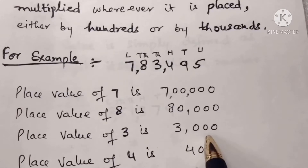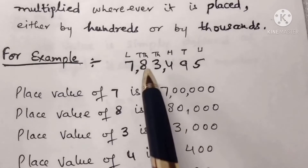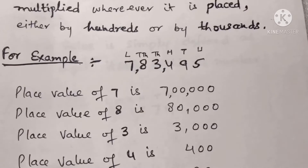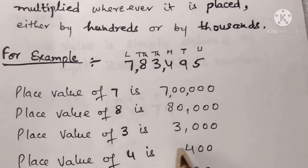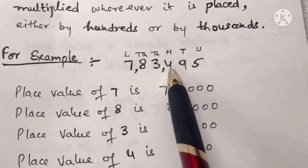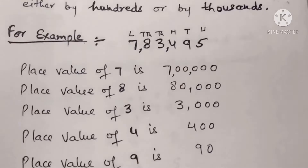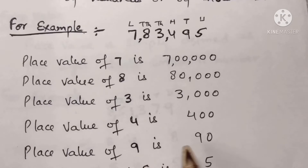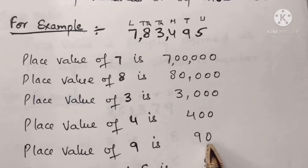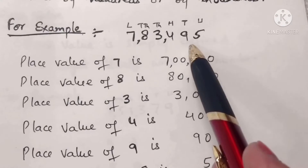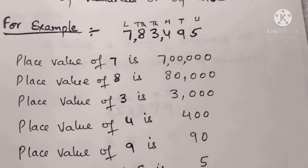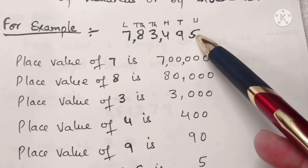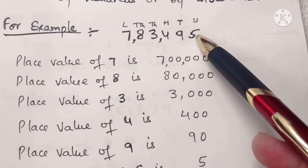The place value of three is three thousand, because three is at the thousand place. The place value of four is four hundred, because four is at the hundred place. The place value of nine is ninety, because nine is at the tens place. And the place value of five is five, because it is at the unit place.